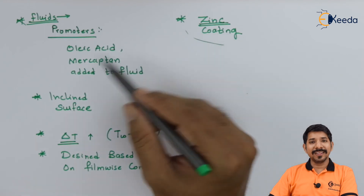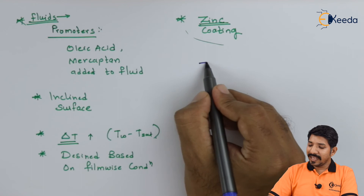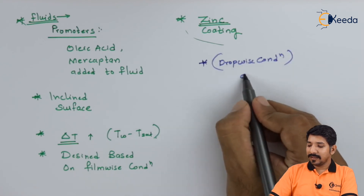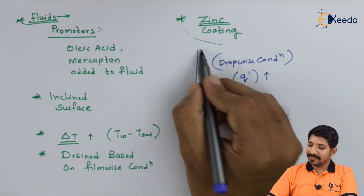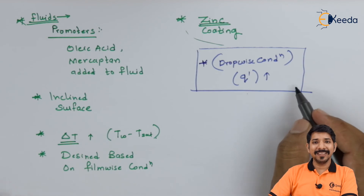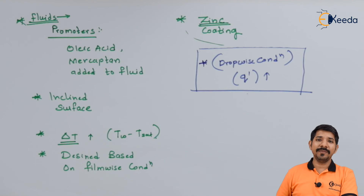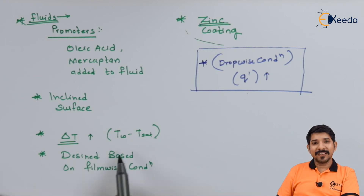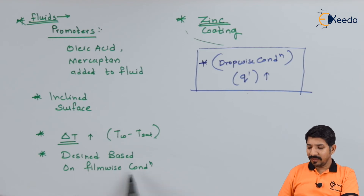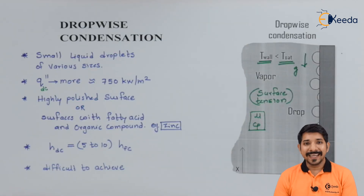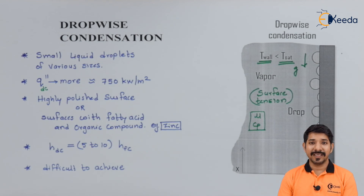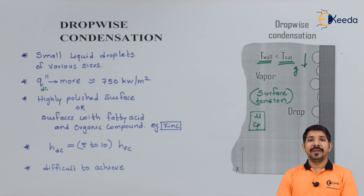By all these means, one can understand that achieving drop-wise condensation gives a very high heat transfer rate. However, practically speaking, it is not easy to achieve drop-wise condensation. In most scenarios, we end up with film-wise condensation. That is why it is always recommended to design any condenser based on film-wise condensation only. In this topic, we discussed drop-wise condensation, its comparison with film-wise condensation, and various methods to increase the heat transfer rate. Thank you for watching this video.